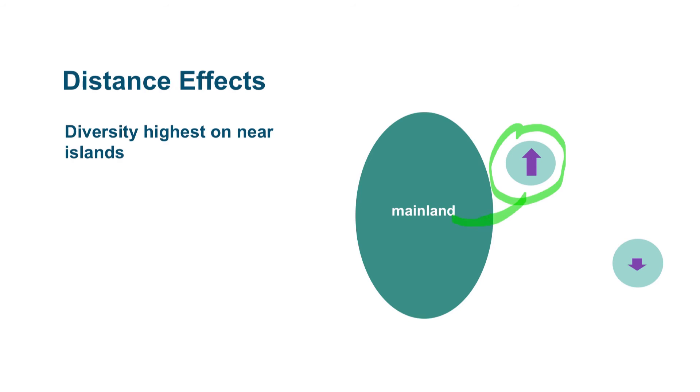An island near the mainland is more likely to get more immigrants than an island far away, just because of the distance. It's more likely that individuals are going to land on an island that's close than on an island that's far away.